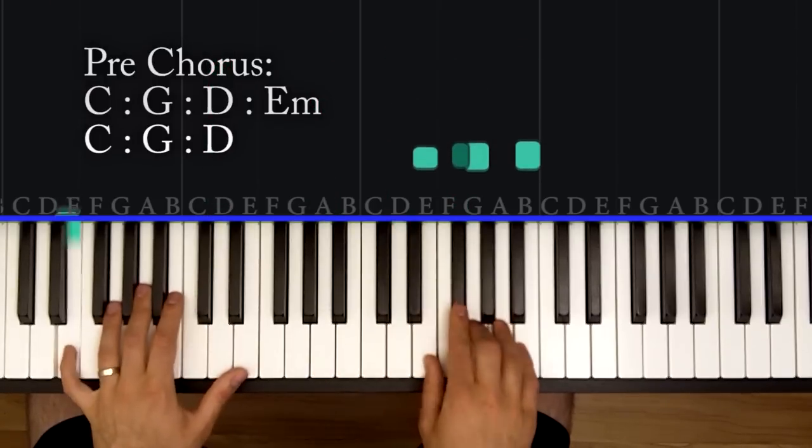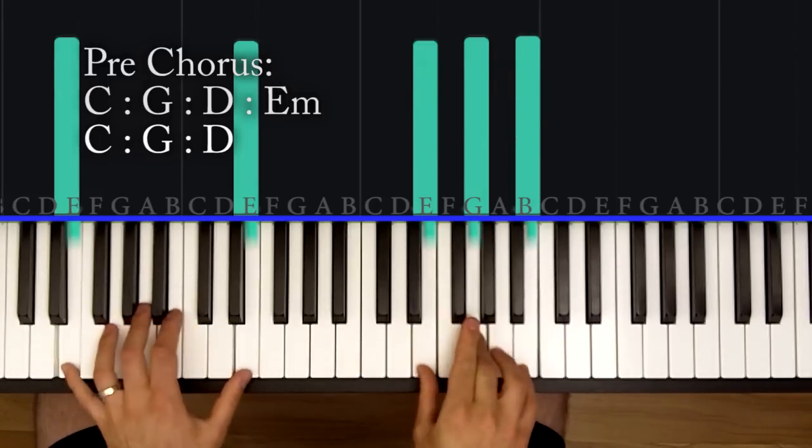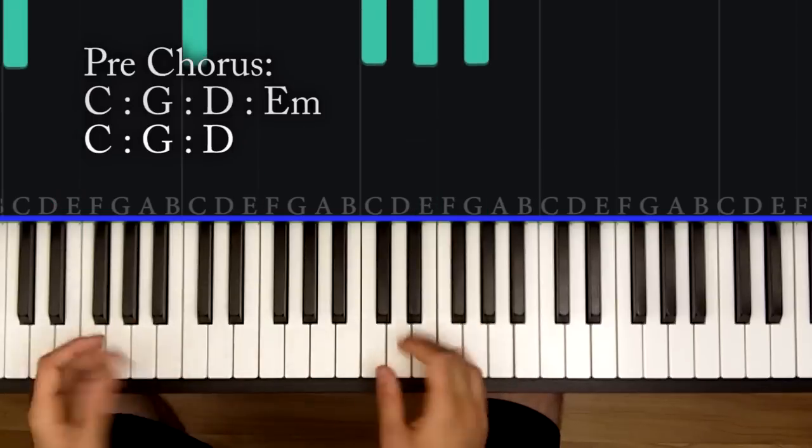Cause baby now we got bad blood. And you notice that after that pre-chorus we go into the chorus. So you pretty much have learned the intro and the verse, just that E minor chord.